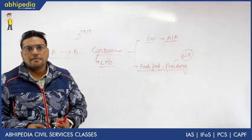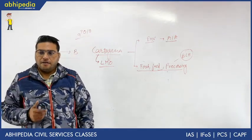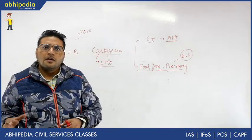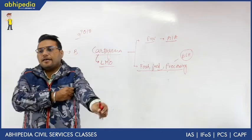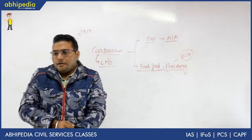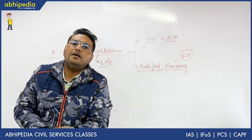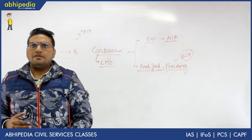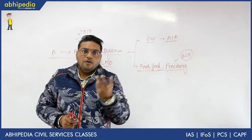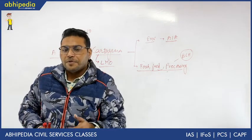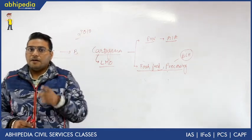Nagoya Protocol is related to sharing benefits and access to genetic resources. If we have any genetic resources or any such resources which can benefit the whole world, it is not that only that particular country can use it. That particular country has to share with others. This is about Nagoya Protocol.